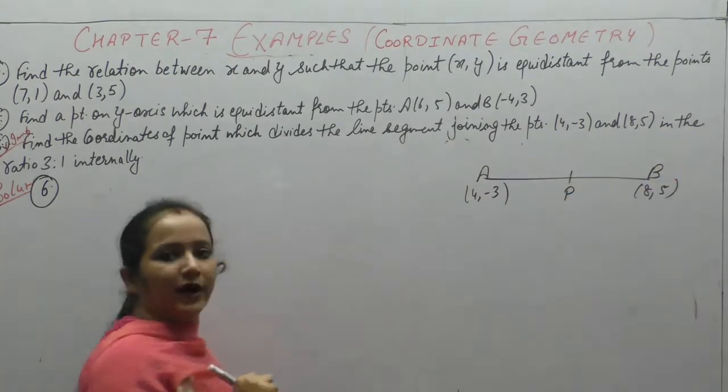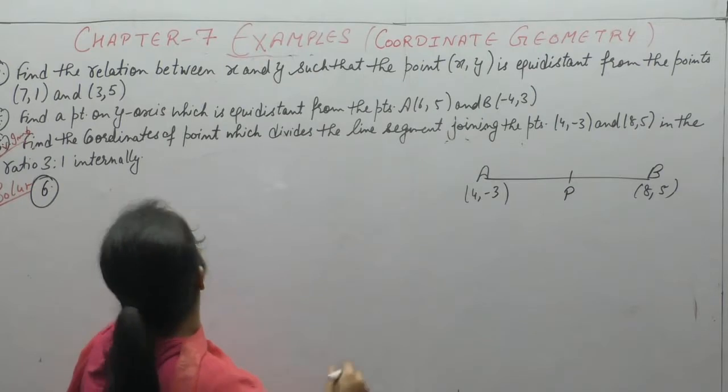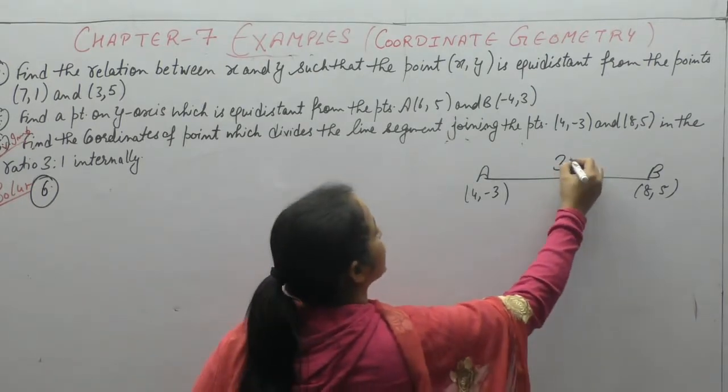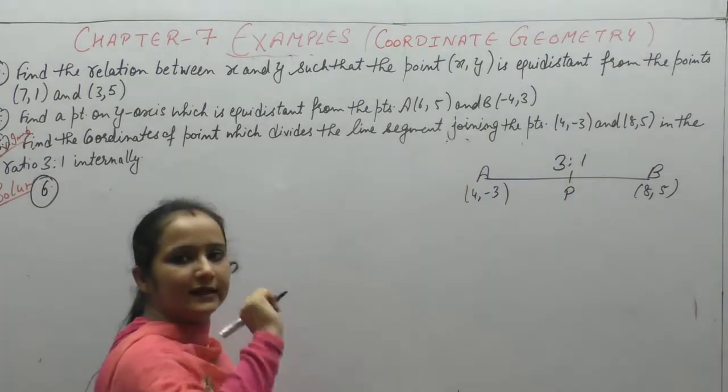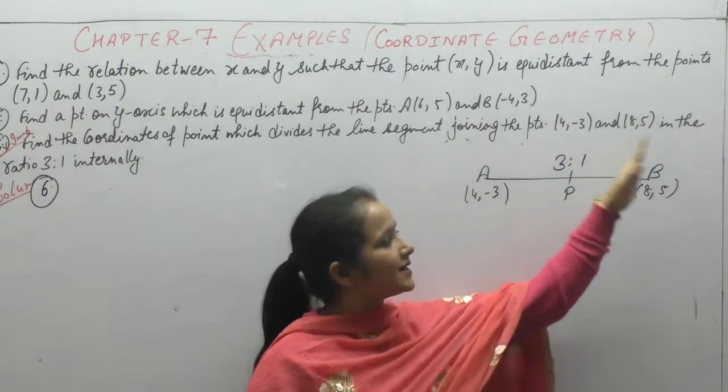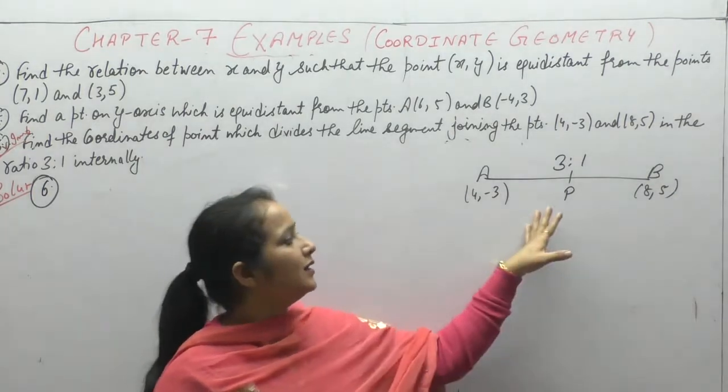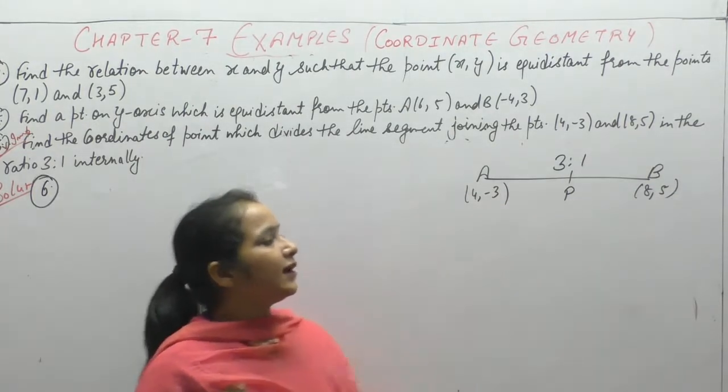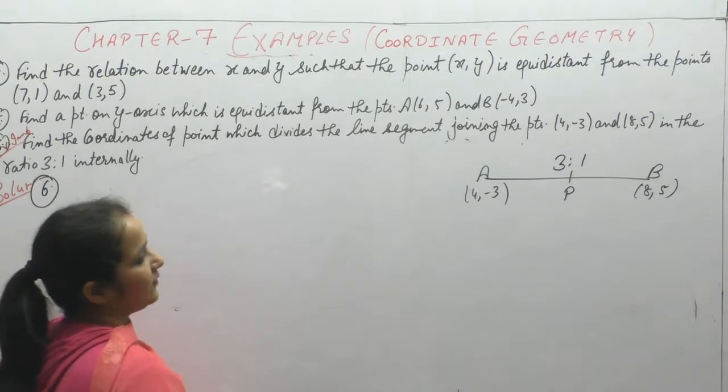Let P be the point that divides the segment in the ratio 3:1 internally. Internally means it divides A and B from inside; if outside, it would be externally. Now we need to find P's coordinates using section formula.